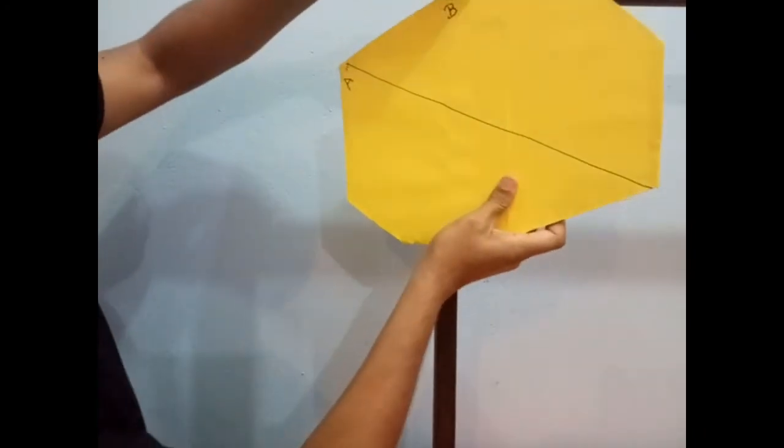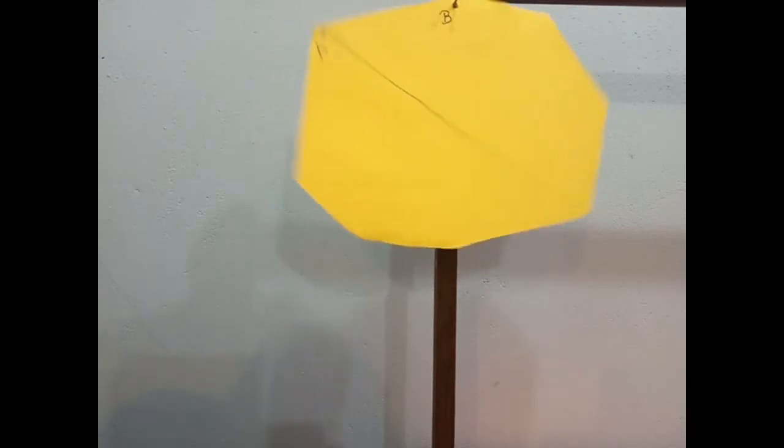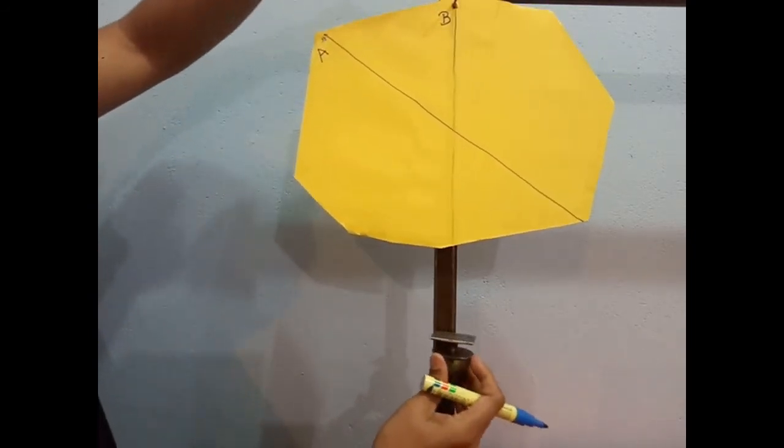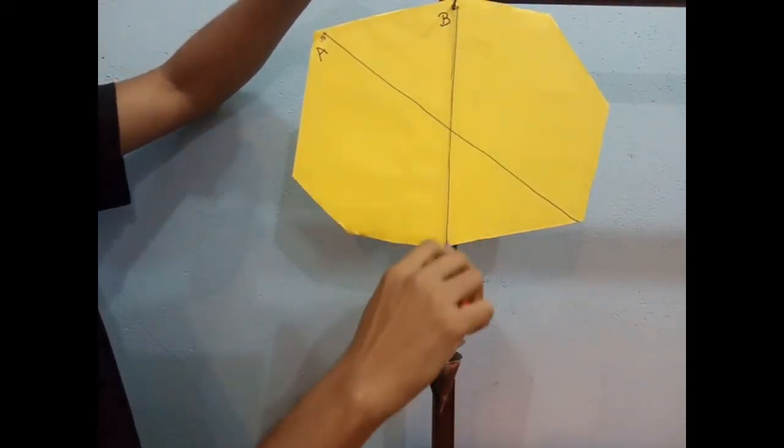Now, we can repeat this experiment at point B. Just swing it. When it comes to rest, with the help of this plumb line, we can draw this vertical line.